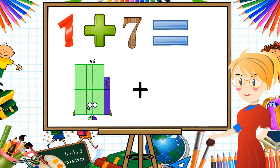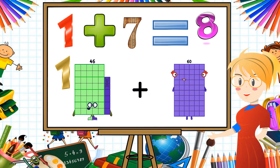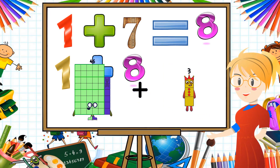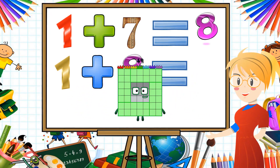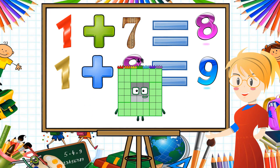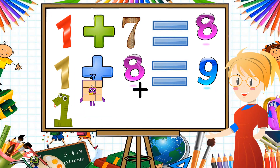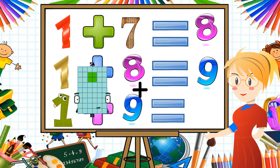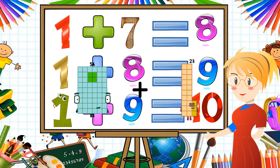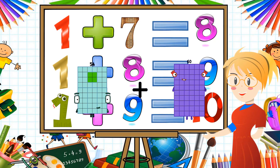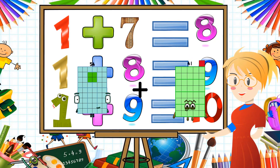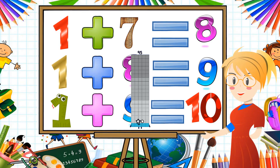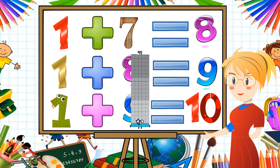46 plus 3 equals 49. 54 plus 41 equals 95.